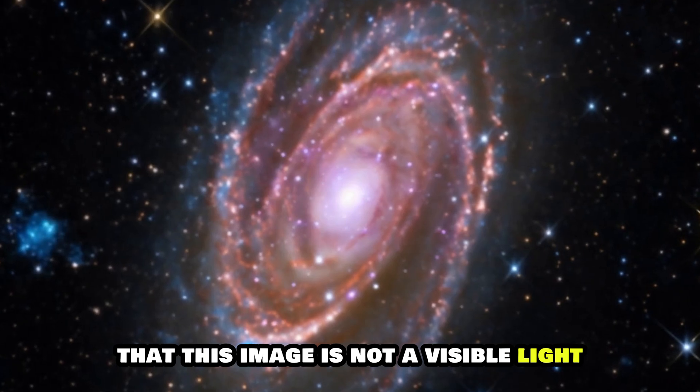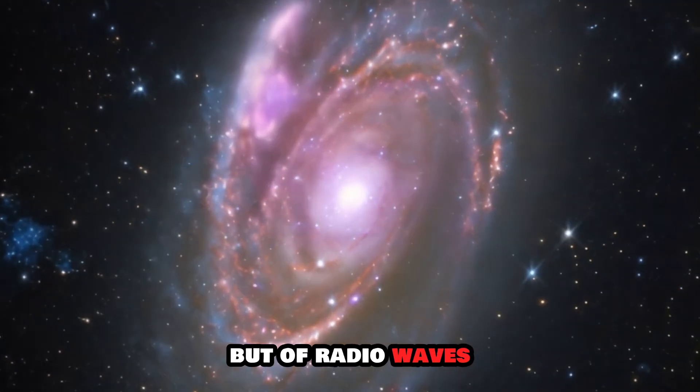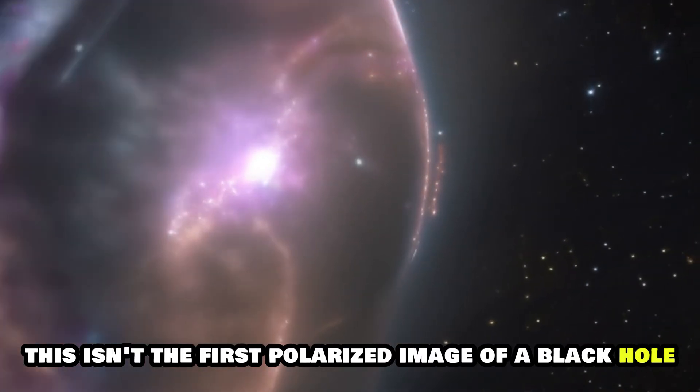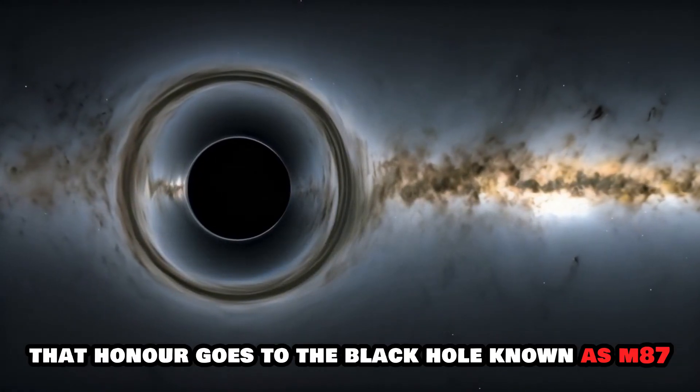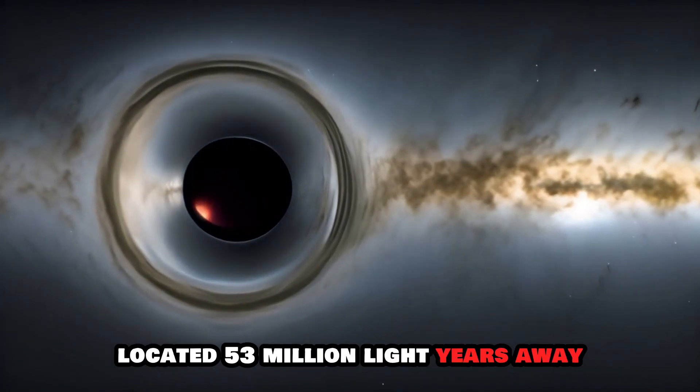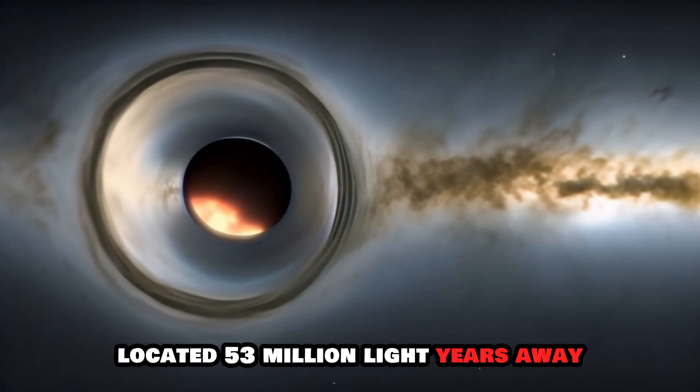It's important to note that this image is not of visible light but of radio waves. While this isn't the first polarized image of a black hole ever captured, that honor goes to the black hole known as M87 asterisk, located 53 million light-years away.